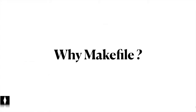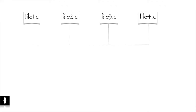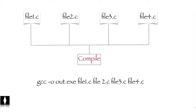Next, let's understand why a makefile is required. Say we have source files file1.c, file2.c, file3.c, and file4.c which we want to compile and generate an executable. We can use the gcc command directly: 'gcc -o out.exe file1.c file2.c file3.c file4.c'. This command compiles the source files and generates the executable out.exe, but you need to retype this command every time in the terminal.